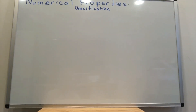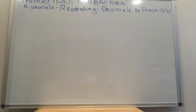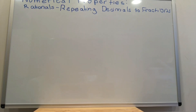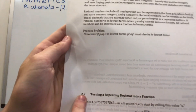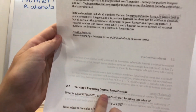Before we move on, try the practice problem under 2.1. The practice problem says to prove that if p over q is in lowest terms, then p squared over q squared must also be in lowest terms. Moving on, we're going to be discussing rational numbers — specifically, since we've already discussed the definition, we're going to be discussing how we can turn a repeating decimal into a fraction. At this point you should be at section 2.2 in your notes: turning a repeating decimal into a fraction.